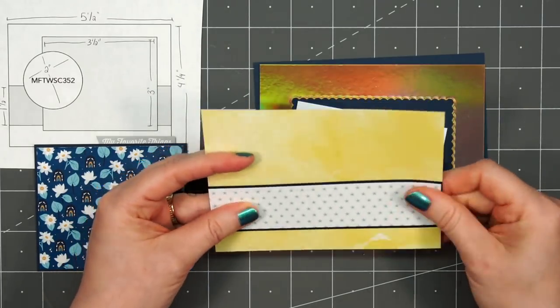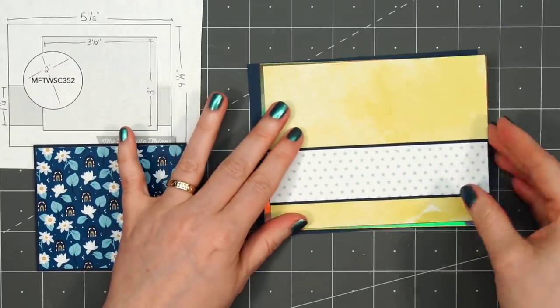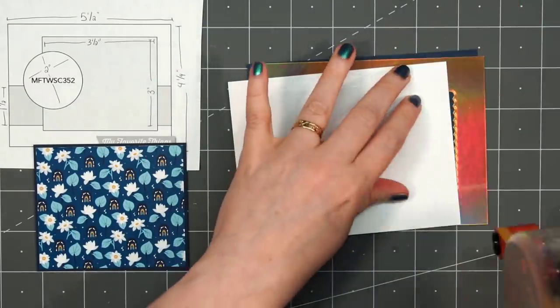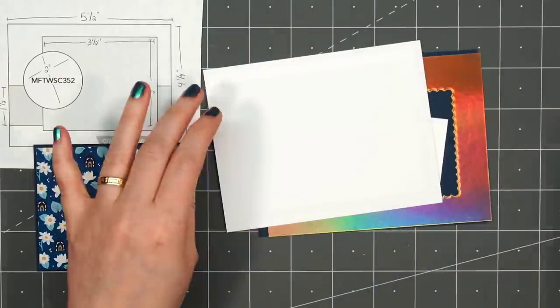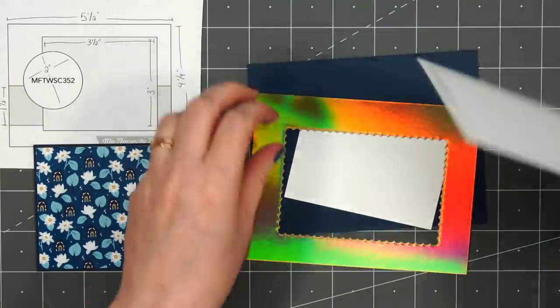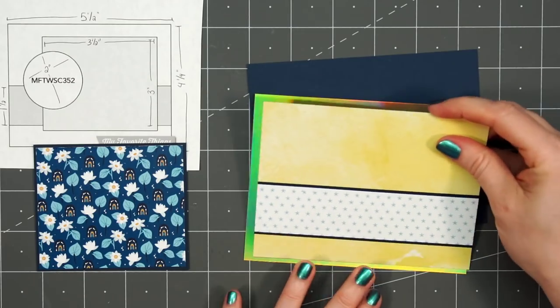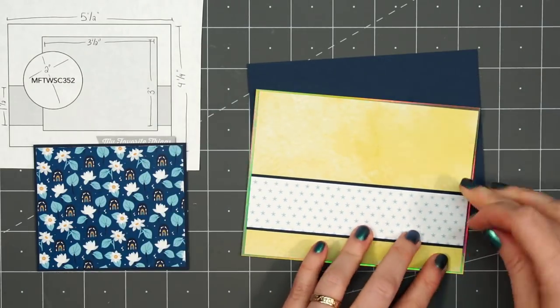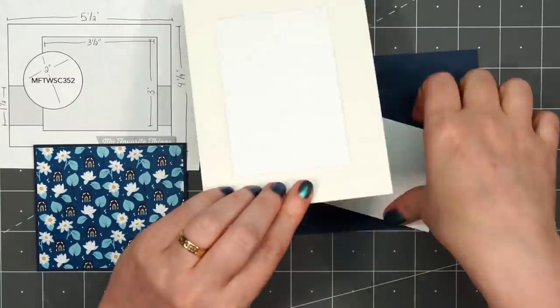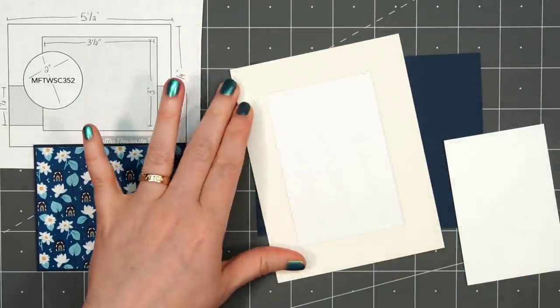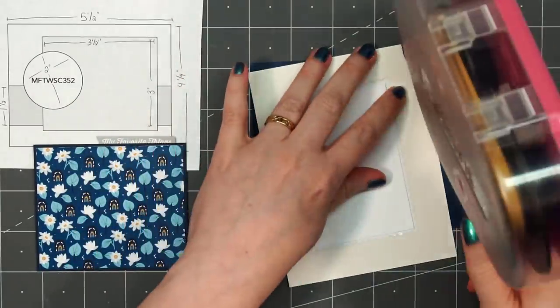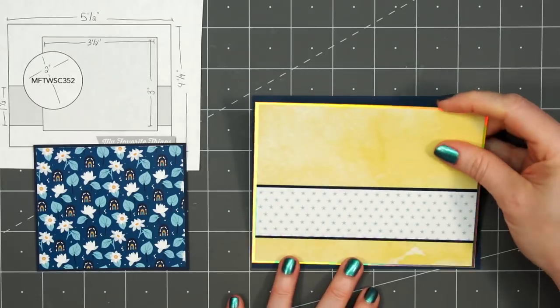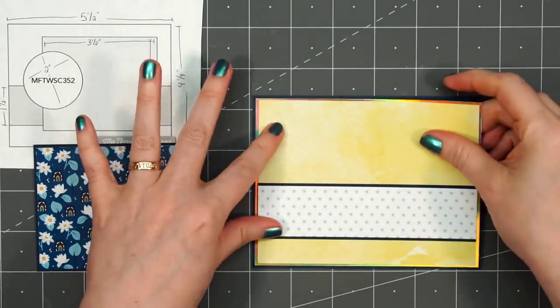Then I'll be layering this panel on some gold holographic cardstock. I did use a scalloped rectangle die to cut out the center so I could save that for another project. Even with just that eighth of an inch matted layer, it still adds a lot of sparkle. I'll add some scrap cardstock in that opening just so there isn't a noticeable dip on the front of the card. Then I'll layer this panel again on some dark blue cardstock.